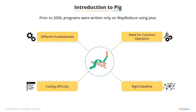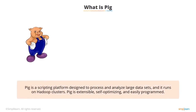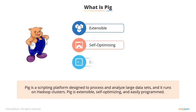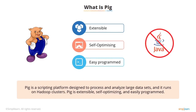PIG is another language, besides Java, in which MapReduce programs can be written. PIG is a scripting platform that runs on Hadoop clusters, designed to process and analyze large data sets. PIG is extensible, self-optimizing, and easily programmed. Programmers can use PIG to write data transformations without knowing Java. PIG uses both structured and unstructured data as input to perform analytics and uses HDFS to store the results.